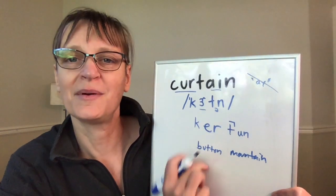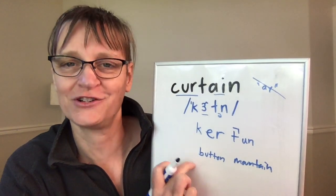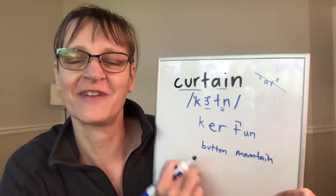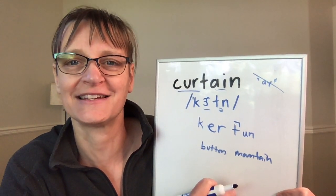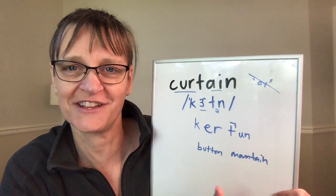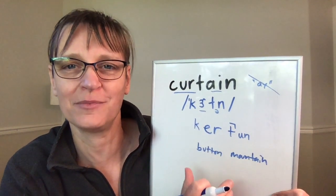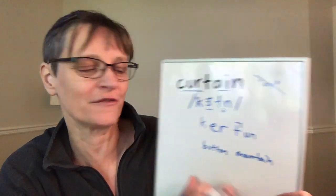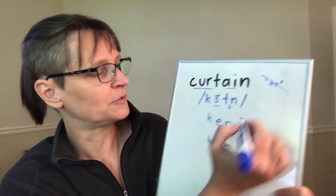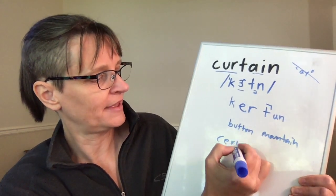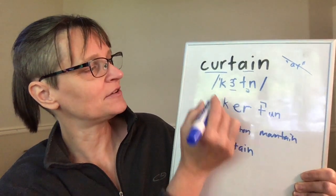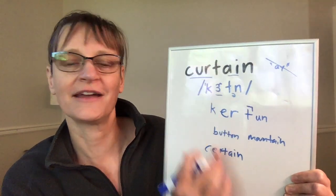For my members I'll be adding a special video talking about the T, stop T, and syllabic N combination. I do also have some lessons and activities on my website regarding this concept. A similar word to 'curtain' is the word 'certain' — spelled differently but with just the S sound instead of the K sound. Curtain and certain.